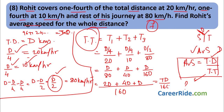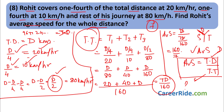Rohit's average speed for the whole journey is 160/7 km/h. When the total distance is unknown, assume it as D, compute individual times in terms of D, add them for total time, and divide D by total time — D cancels to give the average speed.